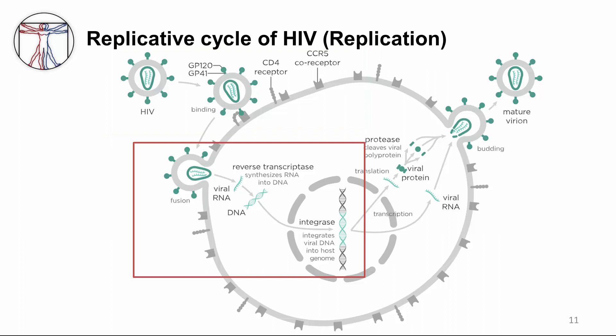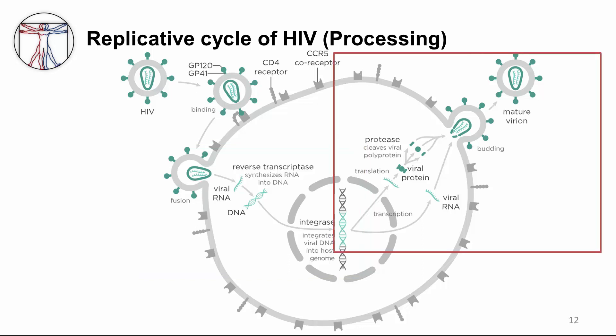The second step, replication, occurs in the cytoplasm. Reverse transcriptase transcribes viral RNA into double-stranded DNA. The double-stranded DNA then migrates into the nucleus of the CD4 cell, where it integrates into host DNA — a process mediated by integrase. The next step is transcription of viral mRNA by host RNA polymerase, where TAT is important, followed by translation into large viral polyproteins. These are cleaved into mature viral proteins by protease, resulting in the mature infectious virion, which then exits the cell.